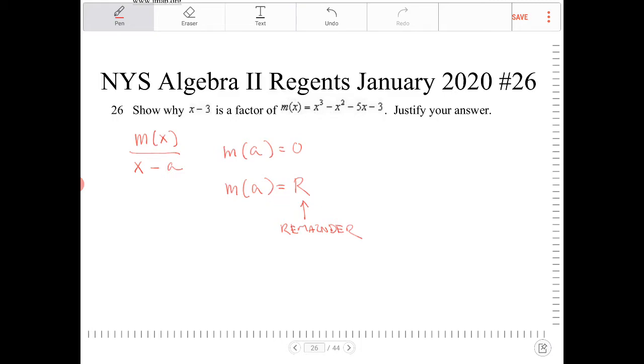So knowing this now, let's try to answer the question. Show why x minus 3 is a factor. So we're going to evaluate m at 3. And if I substitute in 3,